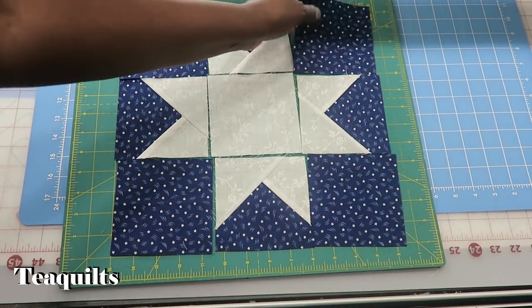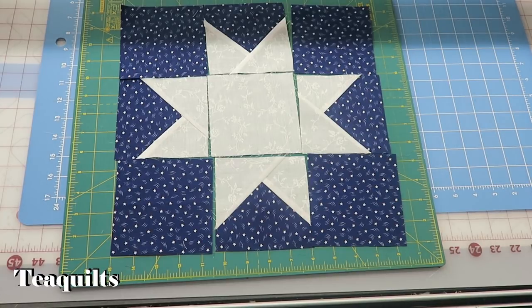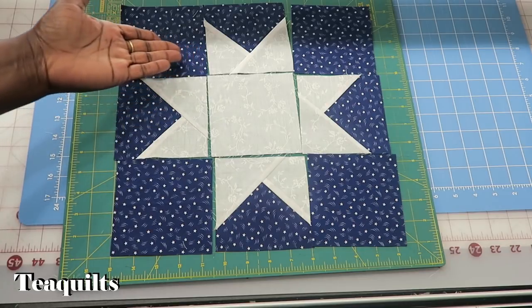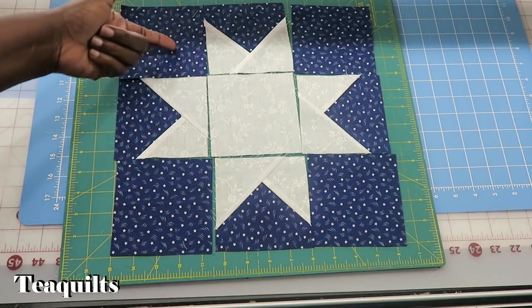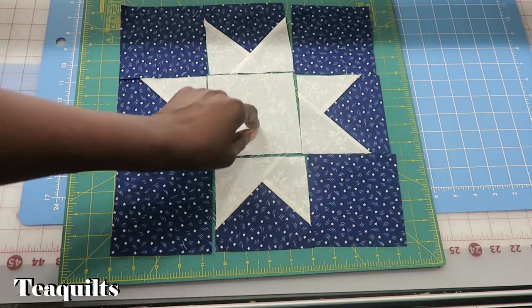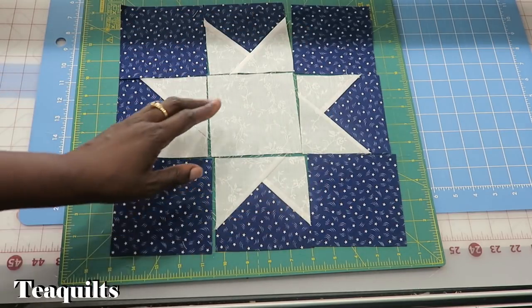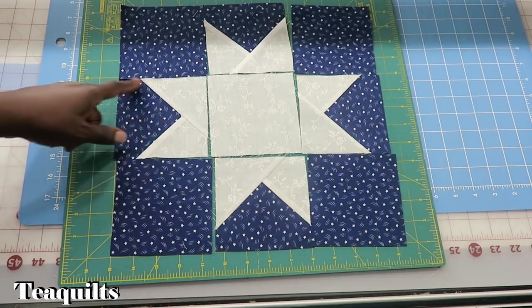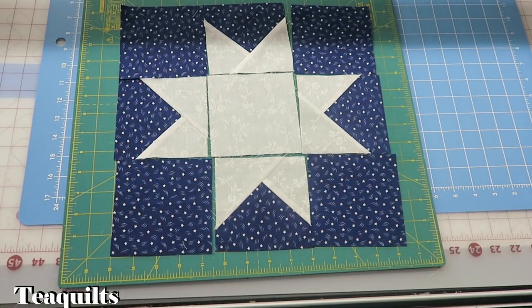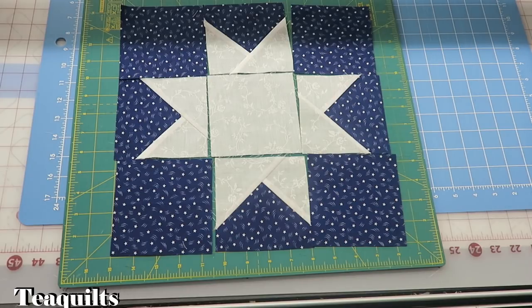And we end with a nine-patch block that we have to sew. So I'll start sewing these pieces together, and then once those are sewn, I'll add these on to the ends and then go through and sew my rows here. So I will go do that and I will come back with my completed nine-patch block.